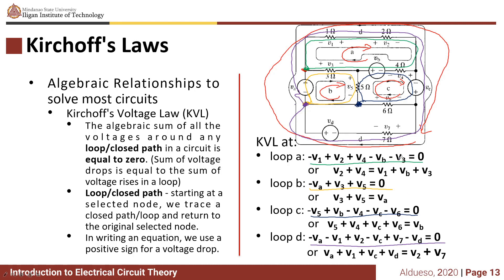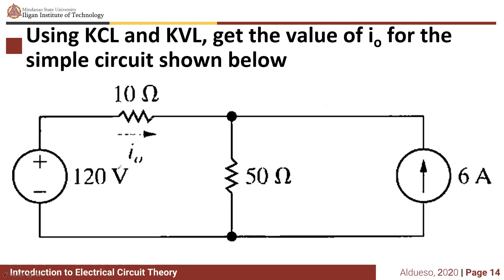That was Kirchhoff's Voltage Law. Now we will use these laws to solve an example using KCL and KVL to get the value of IO for the simple circuit shown below.